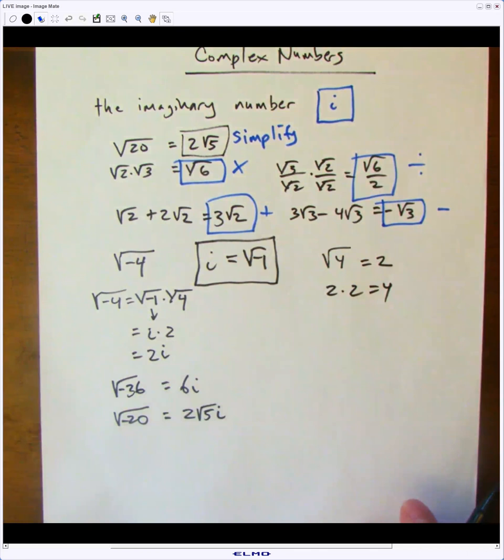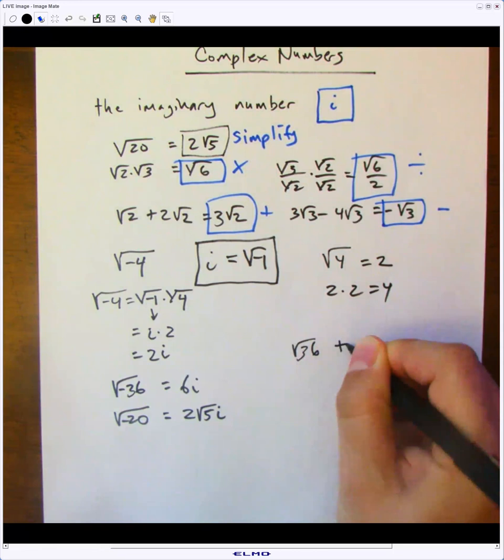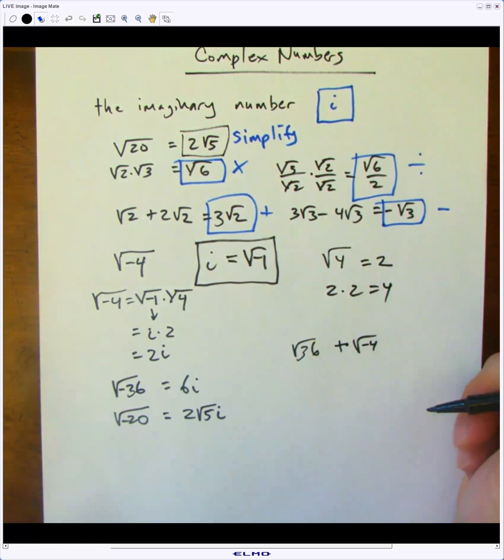Finally, when expressing real numbers and imaginary numbers together, the real number comes first, followed by the imaginary number. For example, if you were asked to simplify square root of 36 plus the square root of negative 4, you would express the real number first, followed by the imaginary number.